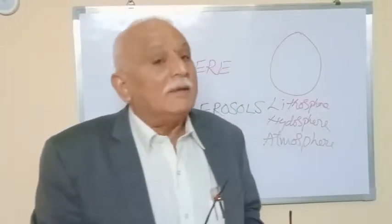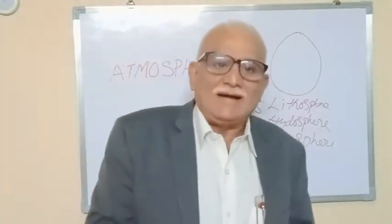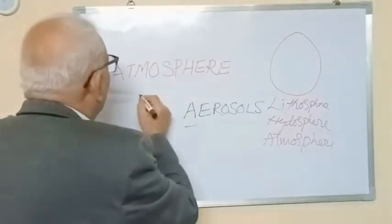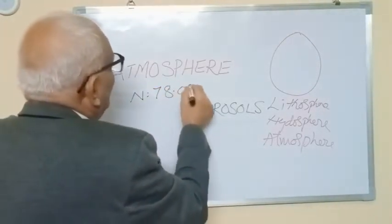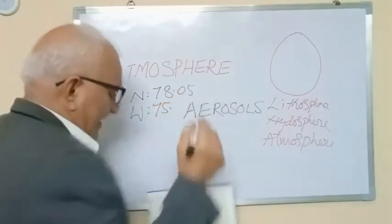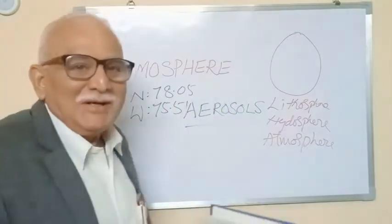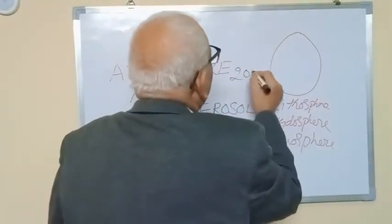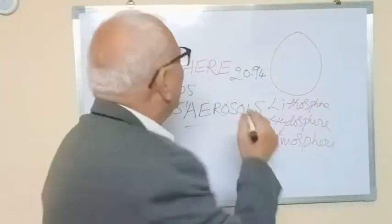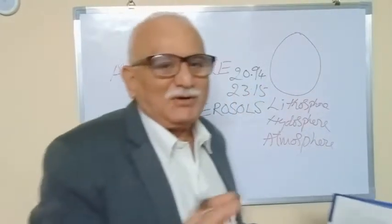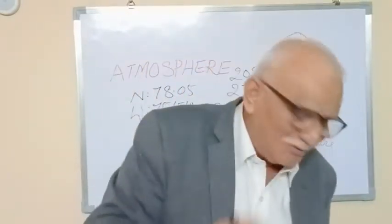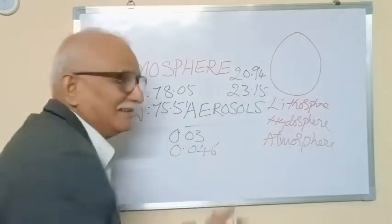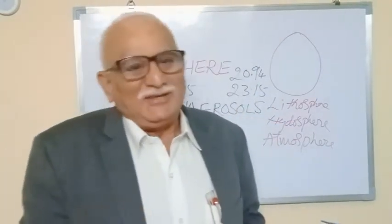If you see the structure of the atmosphere: the nitrogen content by percent volume is 78.05, and by weight 75.51. Oxygen by volume is 20.94, and by weight it is 23.15. The most likely to come is carbon dioxide — by volume it is 0.03, and by weight 0.046.